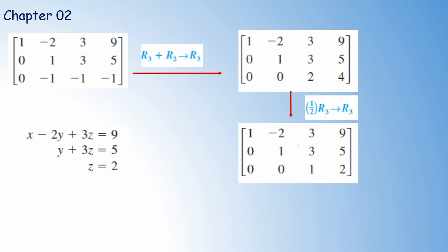Now we write down the corresponding equivalent system. The first equation has coefficients 1, minus 2, and 3, so: x minus 2y plus 3z equals 9. For the second row, there is no x term; the coefficients are 1 and 3, giving: y plus 3z equals 5. For the third equation, there are no x or y terms, giving: z equals 2.